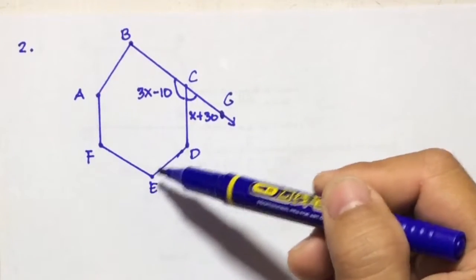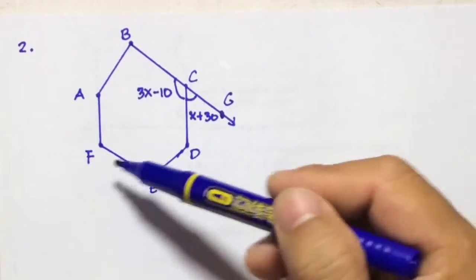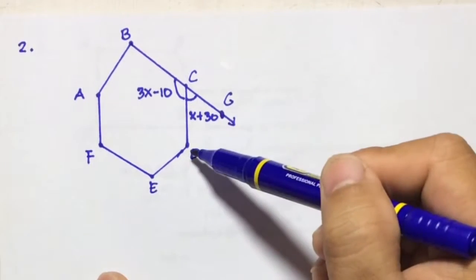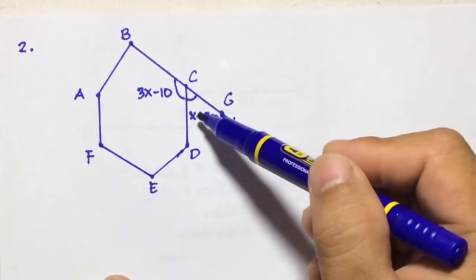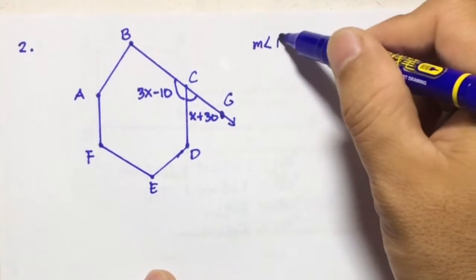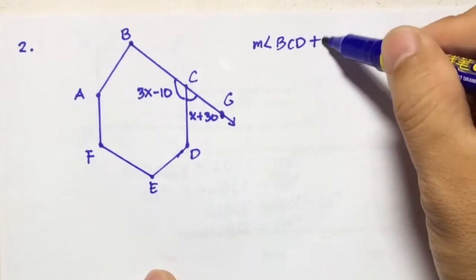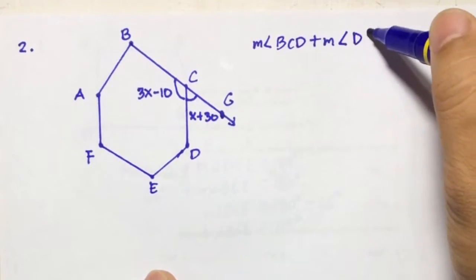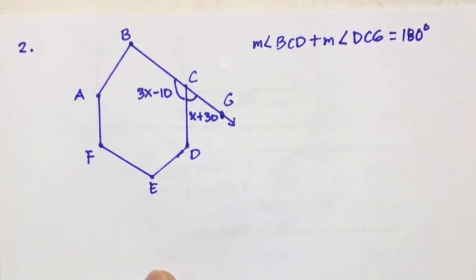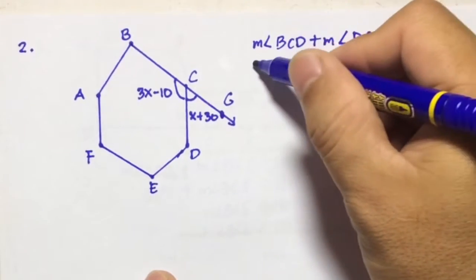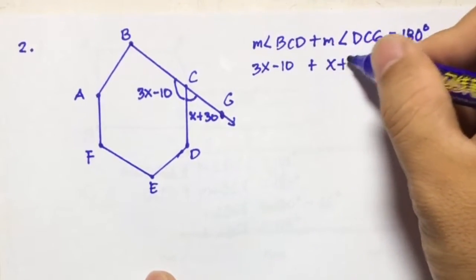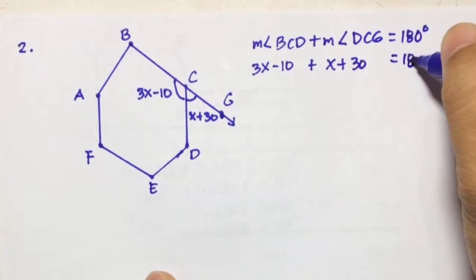Example number 2. We have a hexagon A, B, C, D, E, F with angle BCD equal to 3X minus 10 degrees, and angle DCG equal to X plus 30 degrees. To solve this, the measure of angle BCD, the interior angle, plus the measure of angle DCG, the exterior angle, equals 180 degrees. So we have: (3X minus 10) plus (X plus 30) equals 180 degrees.